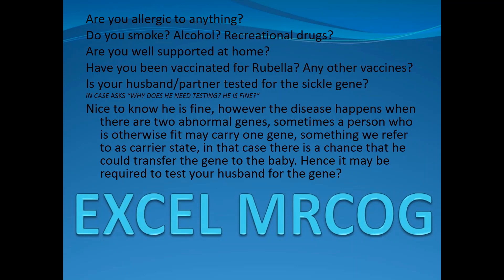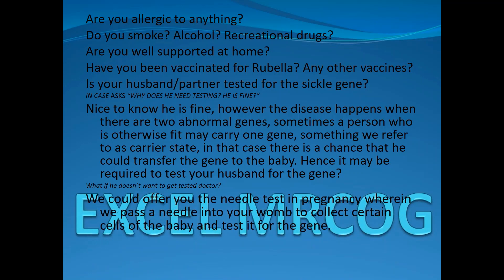However, the disease happens when there are two abnormal genes. Sometimes a person who is otherwise fit may carry one gene — something we refer to as a carrier state. In that case, there is a chance that he could transmit the gene to the baby. Hence, it may be required to test your husband for the gene. We could offer you a needle test in pregnancy in case your husband is not willing to get tested, wherein we pass a needle into your womb to collect certain cells of the baby and test it. Is that okay with you, Sarah?